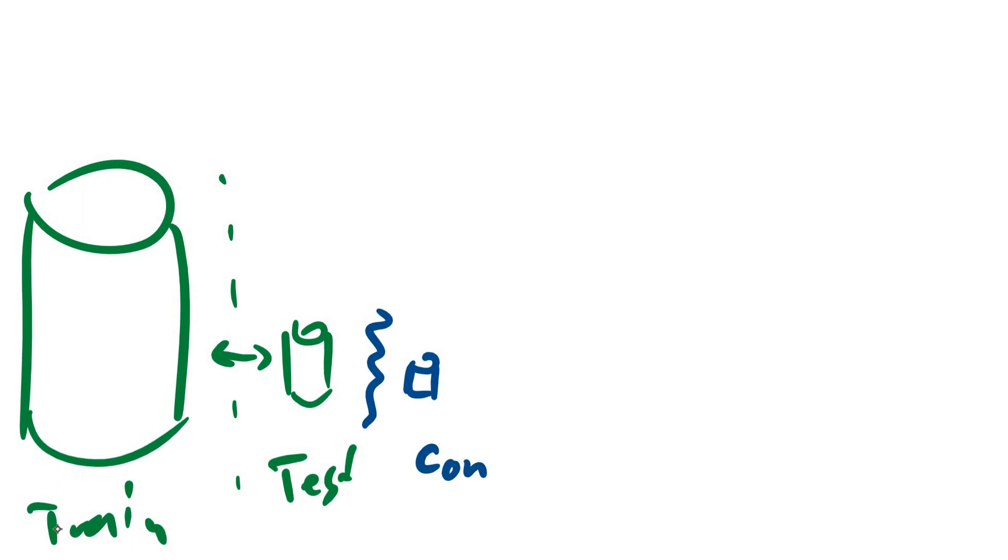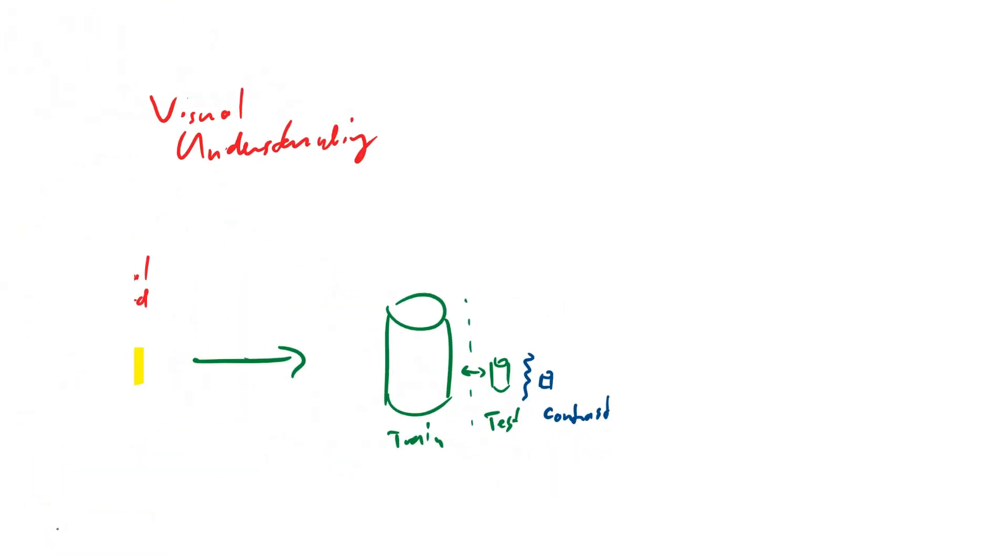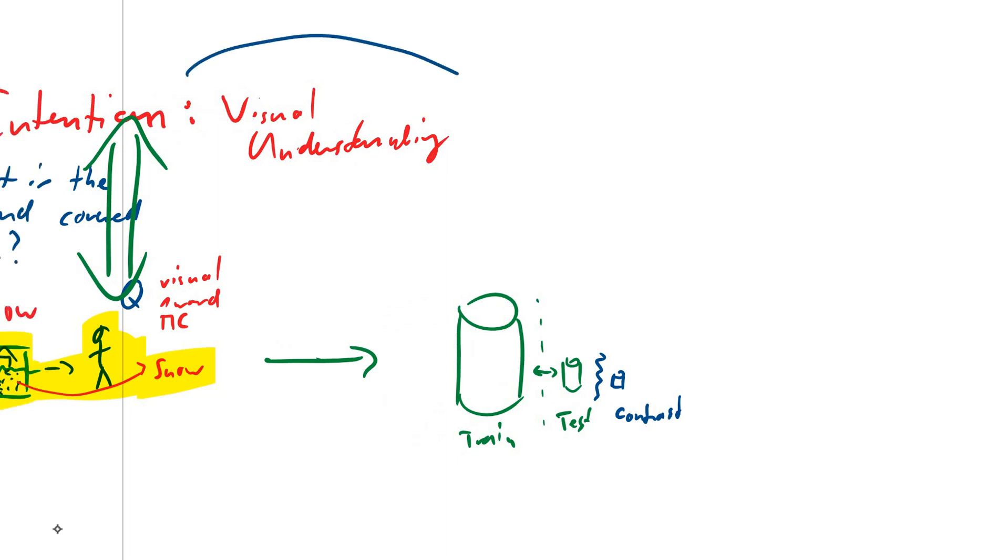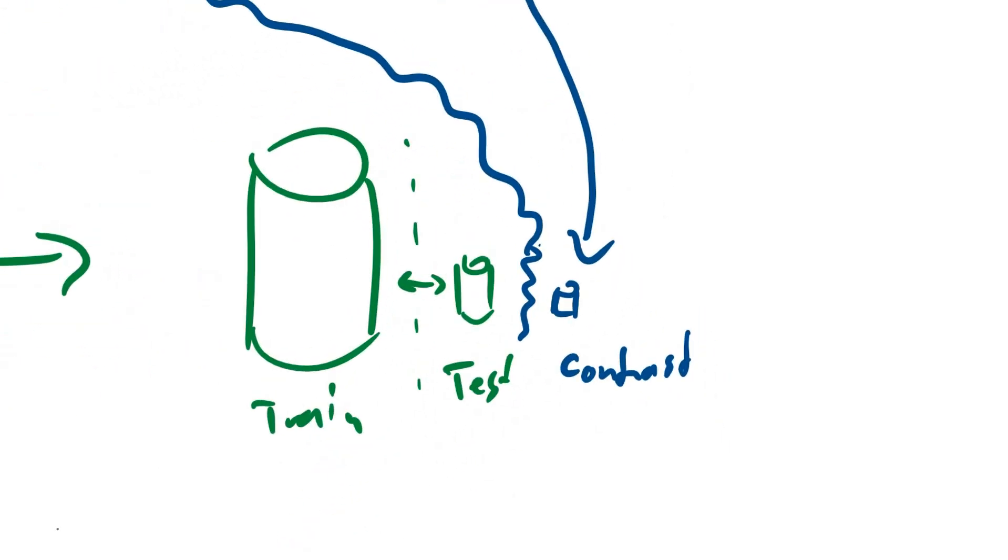What they argue is that the authors of the data set should create the contrast set. So you see that there's a split here where the data set comes from. They argue that the authors of the data set with knowing what intention they have, they should create the contrast data set manually by hand in order to make really hard examples that show what they want out of the system.